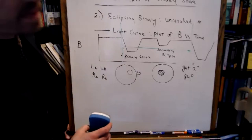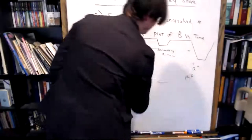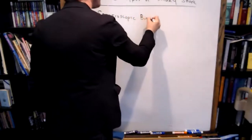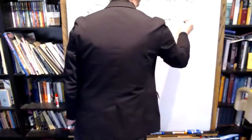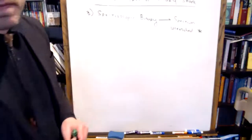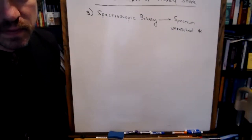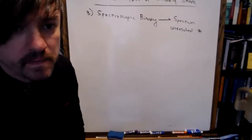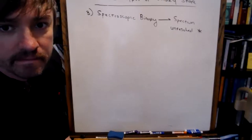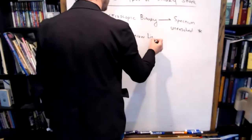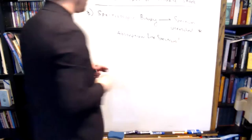Our third type of binary is called a spectroscopic binary. In a spectroscopic binary, you take the spectrum of an unresolved star. Stars produce an absorption line spectrum. In the case of a spectroscopic binary, you actually see two absorption spectra and you watch the spectra shift back and forth over time.